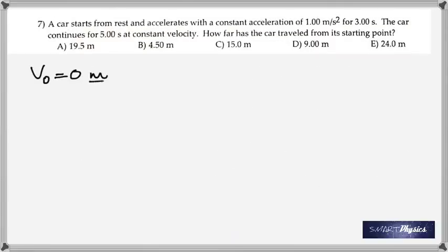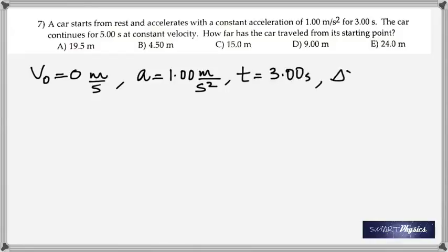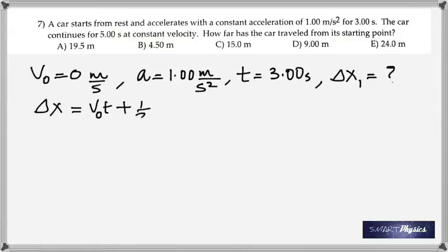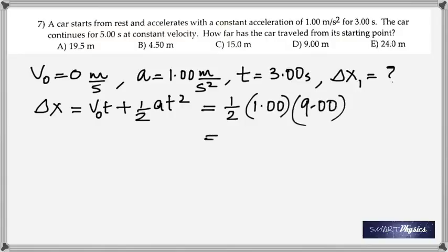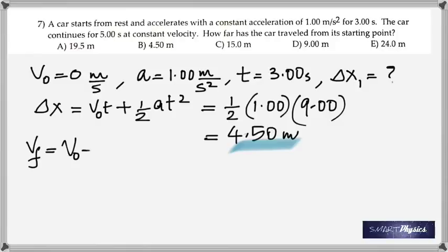Number 7: a car starts from rest and accelerates at 1 m/s² for 3 seconds, then continues at constant velocity for 5 seconds. Find the total distance. In the first part: v₀ = 0, a = 1, t = 3. Using Δx = v₀t + ½at², in those 3 seconds you get displacement of 4.50 meters.